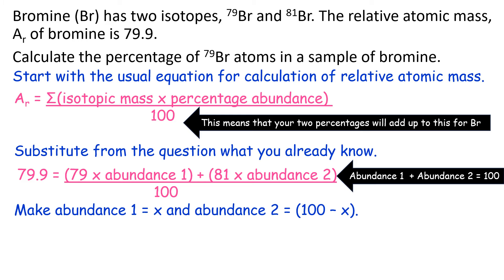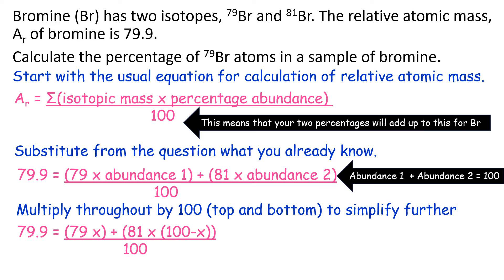So you need to make abundance one x and abundance two 100 minus x, so x plus 100 minus x will give you 100. This allows us to create an algebraic expression that we can now simplify. So you multiply throughout by 100, top and bottom, and that simplifies it further.